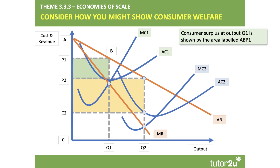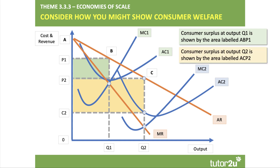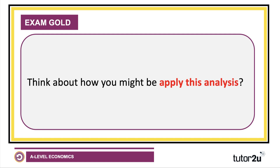Now think about economies of scale and the link with consumer surplus. In an exam it's best to label rather than shade. Consumer surplus at the original price and output P1 Q1 is shown by the area labeled A B P1. With scale economies, we move to output Q2 and price P2, so consumer surplus becomes the area A C P2. There has therefore been a gain in consumer surplus of P1 B C P2, meaning economies of scale can lead to an increase in consumer surplus.